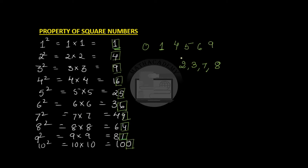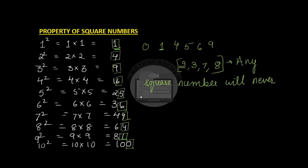So we see that any square number will never have 2, 3, 7, or 8 as the ones digit. This is applicable to any square number. If you do 11 squared you get a 1 at the end as the ones digit. If you do 22 squared you get a 4 as the ones digit. If you do 25 squared you get 5 as the ones digit. If you do 45 squared it is again 5 at the ones digit.